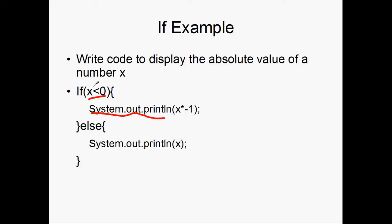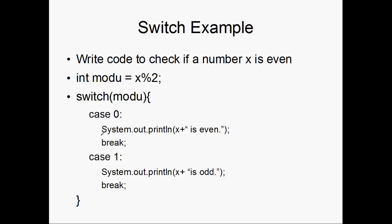So now we're going to do a quick example with the switch. Write code to check if a number x is even. We're going to use the modulus function that we learned in lesson 2, right here. And we're going to find x mod 2. Now when you take the modulus of 2, this is essentially checking if a number is even or odd. If a number is odd, when you divide it by 2, you'll always have a remainder of 1. And conversely, if x is even, then when you divide it by 2, you'll always have a remainder of 0.